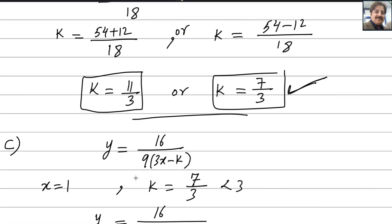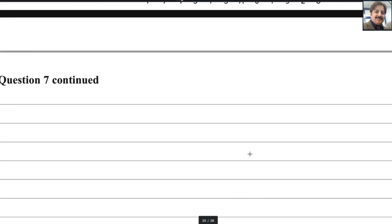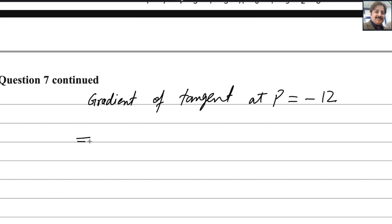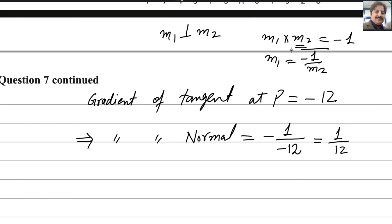The gradient of the tangent line at P is minus 12, as given in the question. The gradient of the normal is minus 1 over the gradient of the tangent. If two lines are perpendicular, the formula is m1 times m2 equals negative 1, so m1 equals minus 1 over m2. Using this, the gradient of the normal equals minus 1 over negative 12, which gives 1 over 12. So the gradient of the normal is 1 over 12.